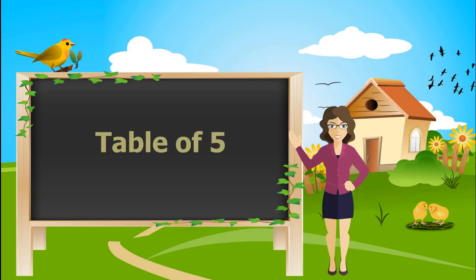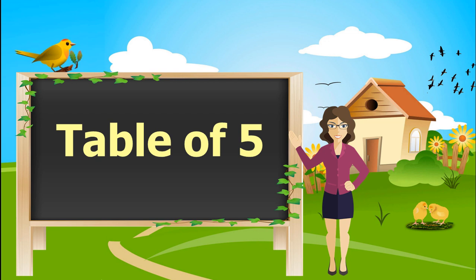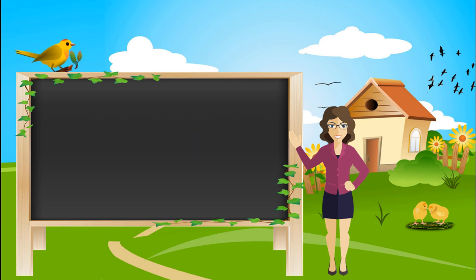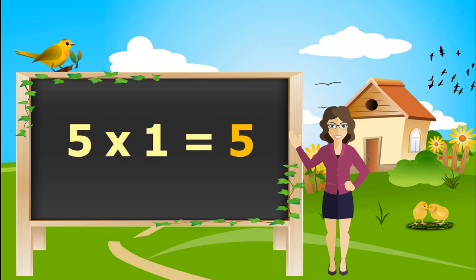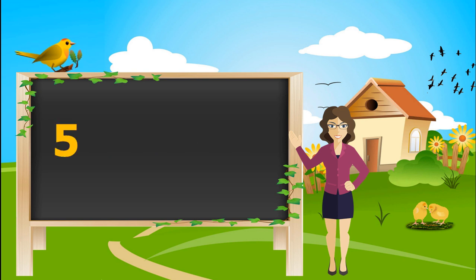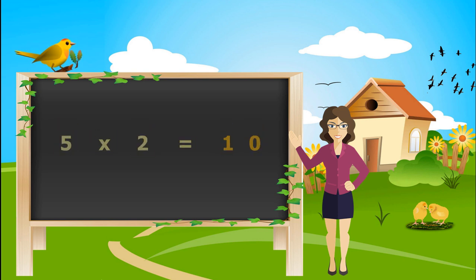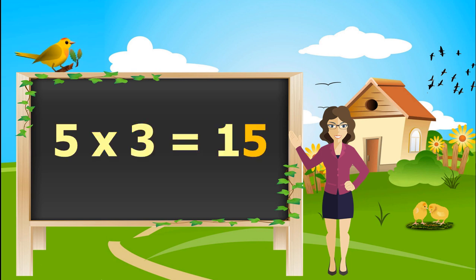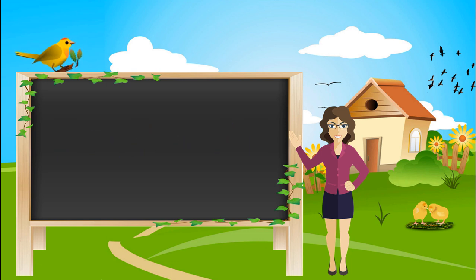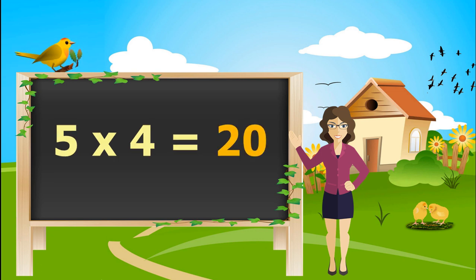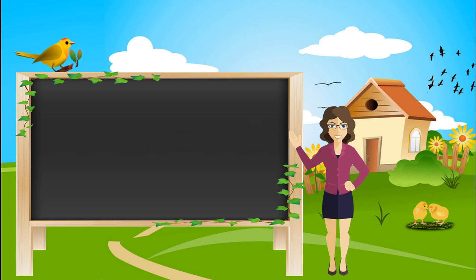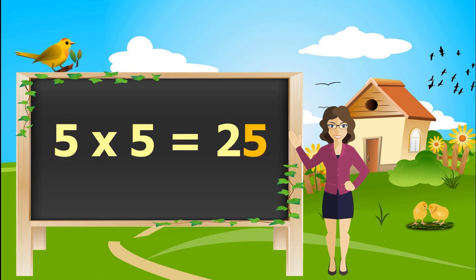Let's learn the table of 5. 5 times 1 is 5. 5 times 2's are 10. 5 times 3's are 15. 5 times 4's are 20. 5 times 5's are 25.